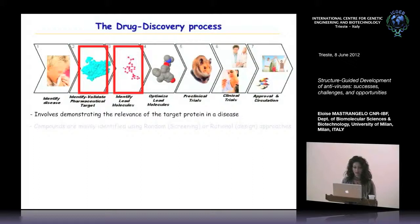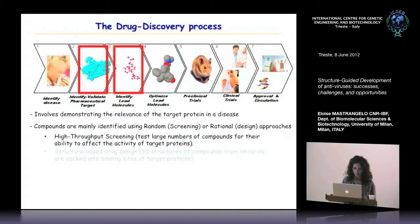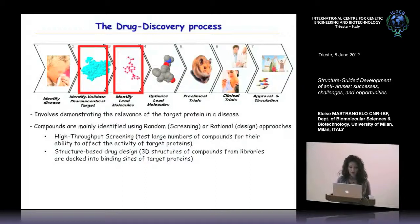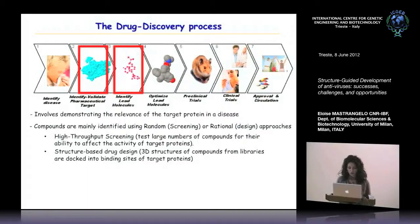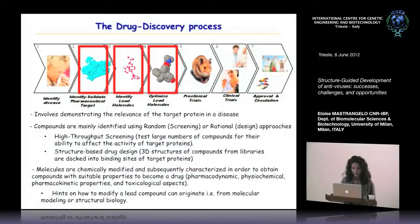We can start the identification of lead molecules, mainly identified using random or rational screening approaches, in particular using high-throughput screening which tests large numbers of compounds to see if they are able to affect the activity of the target protein, or structure-based drug design which uses the three-dimensional structure to dock small molecules into the binding site of the target protein.